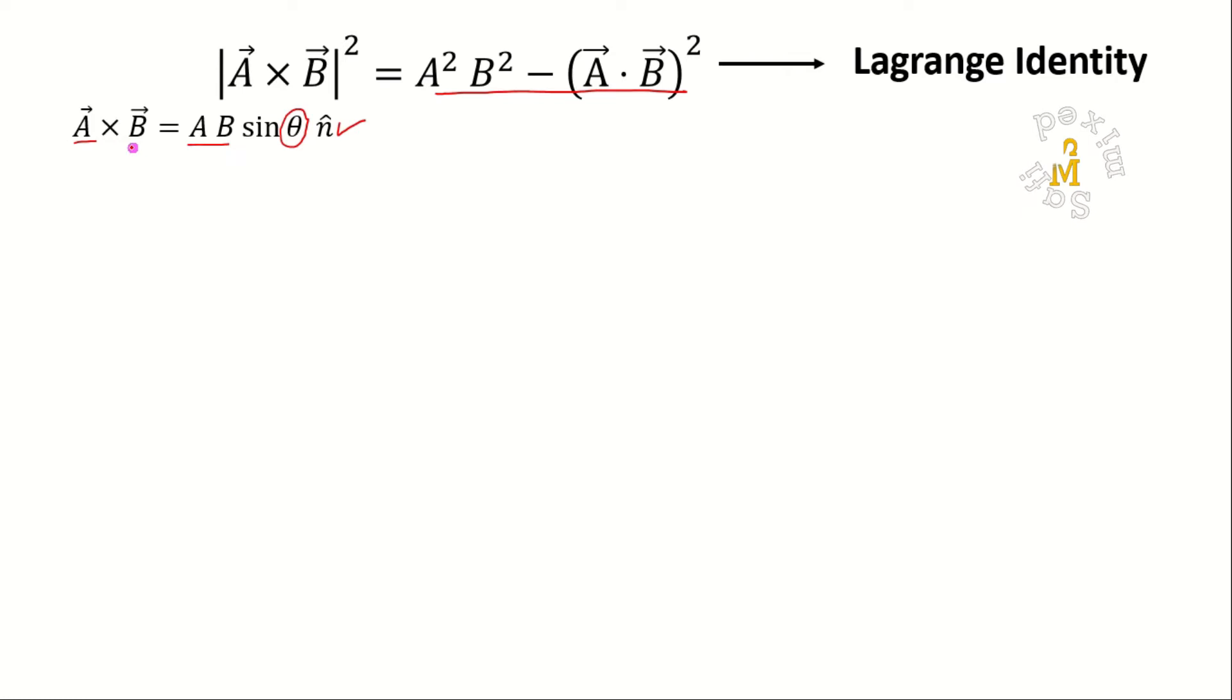Then the modulus square of the two vectors can be written as the scalar product of the cross product of the two vectors.